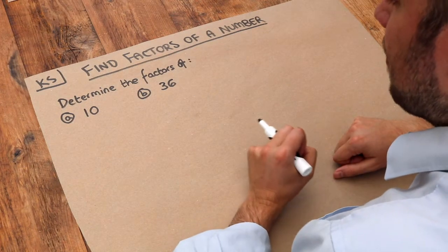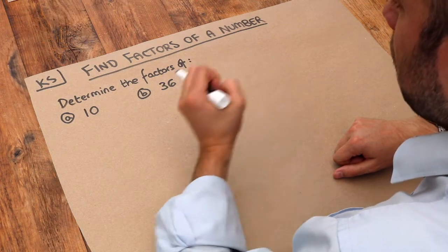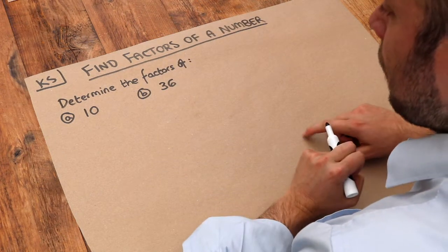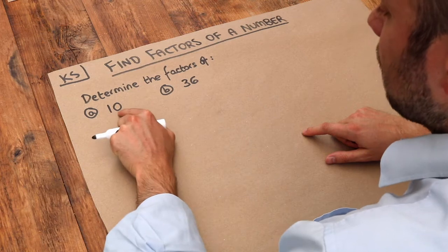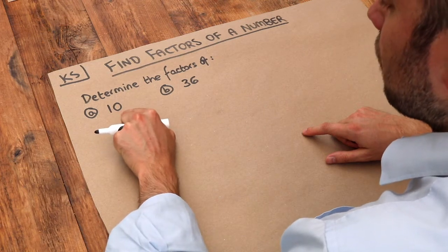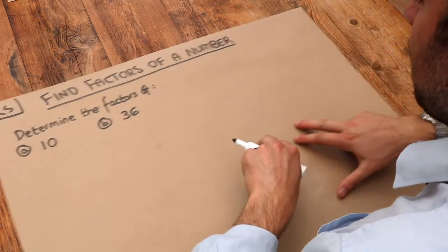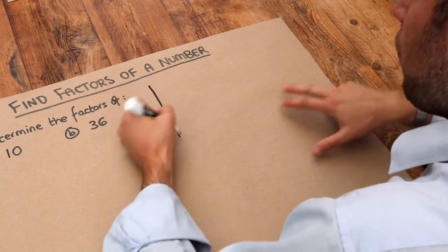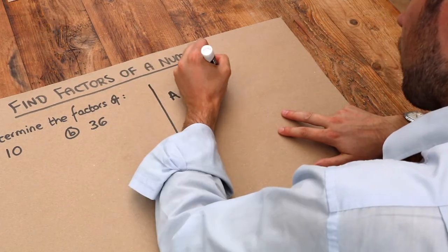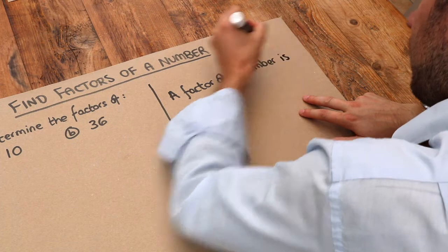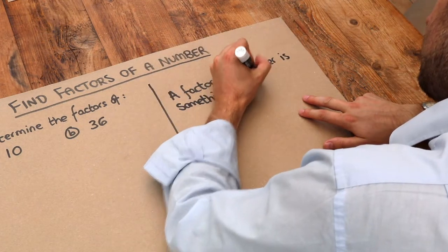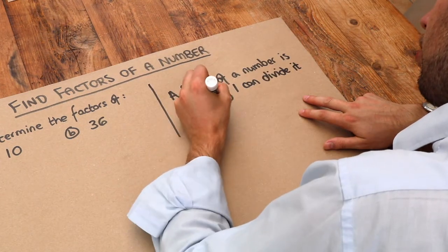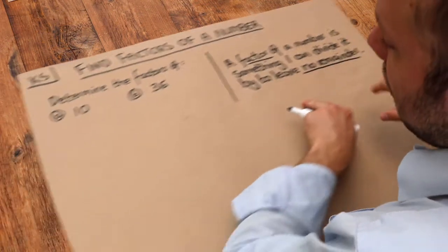In maths, a factor of something is just a number that goes into it. For example, if I wanted the factors of 10, I need something that goes into 10. Let's define that more formally: a factor of a number is something I can divide it by to leave no remainder. This will be clear when we consider these examples.